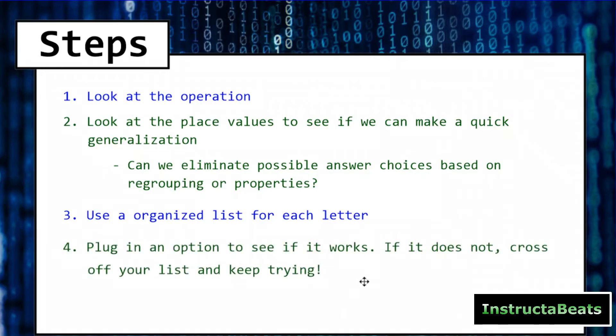Step number four, we're going to plug in an option. So we might eventually get to a point where we have to guess and check. So we're going to plug that option in, see if it works. If not, we'll cross it off our organized list and keep trying. And then as always, step number five, figure it out. We got to figure it out. We got to just sit down, have some perseverance, have some problem-solving strategies, and we got to figure it out.